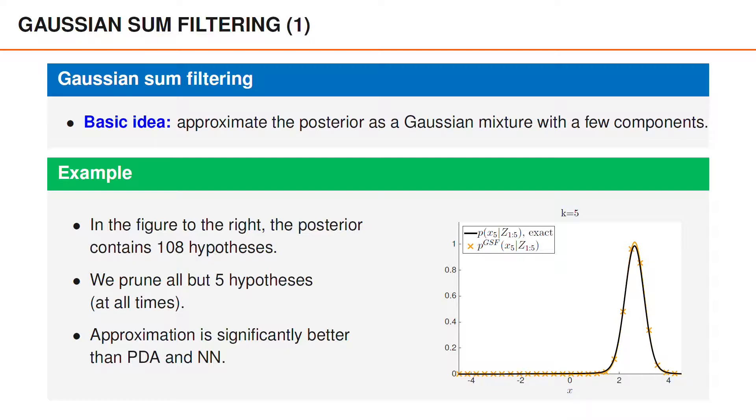It should be noted, though, that the illustrated Gaussian sum filter caps the number of components to five at all times, and that it therefore introduces approximations also before time five. We will describe this strategy in more detail shortly.